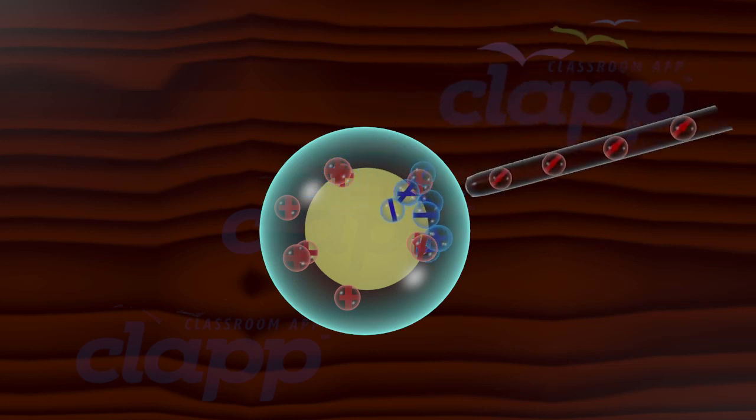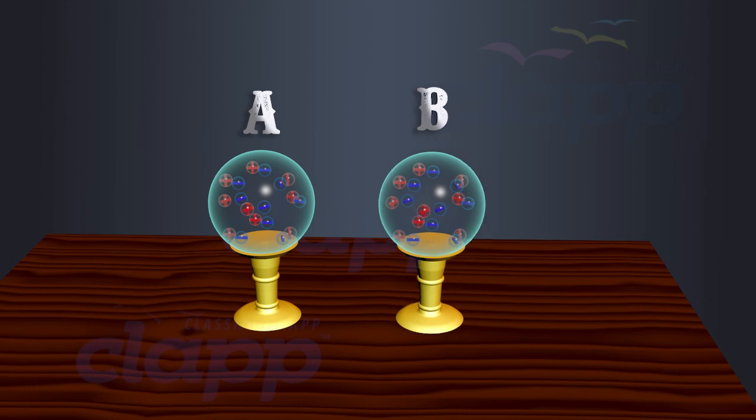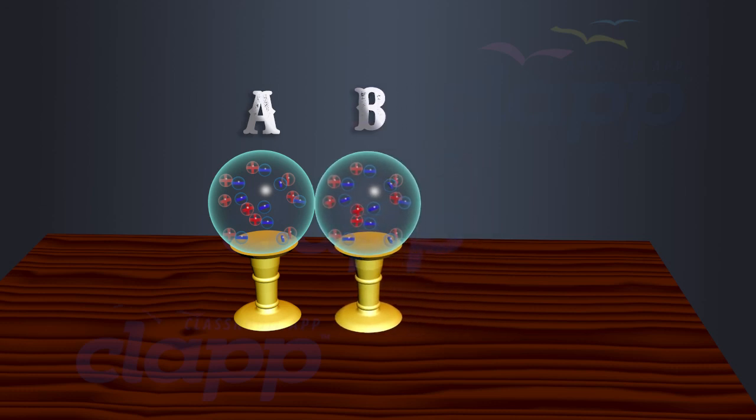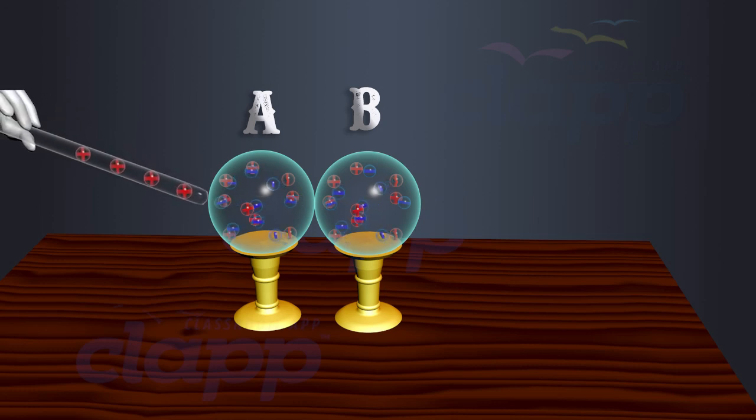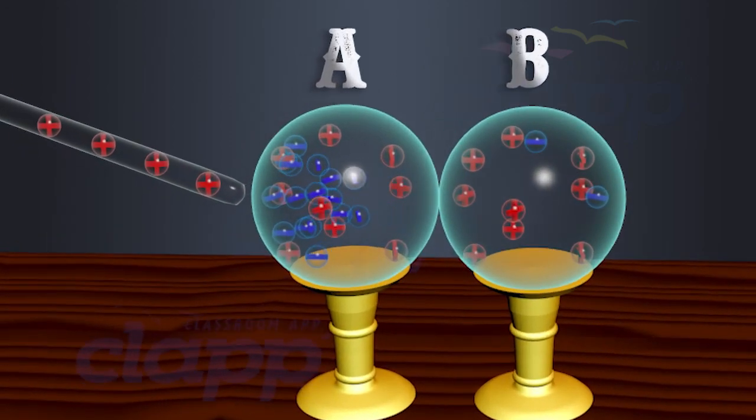Charging by Induction: Consider two neutral metallic spheres supported on an insulating stand, A and B, placed in contact with each other. Bring a positively charged glass rod near one end of the spheres, say A, taking care that it does not touch the spheres.